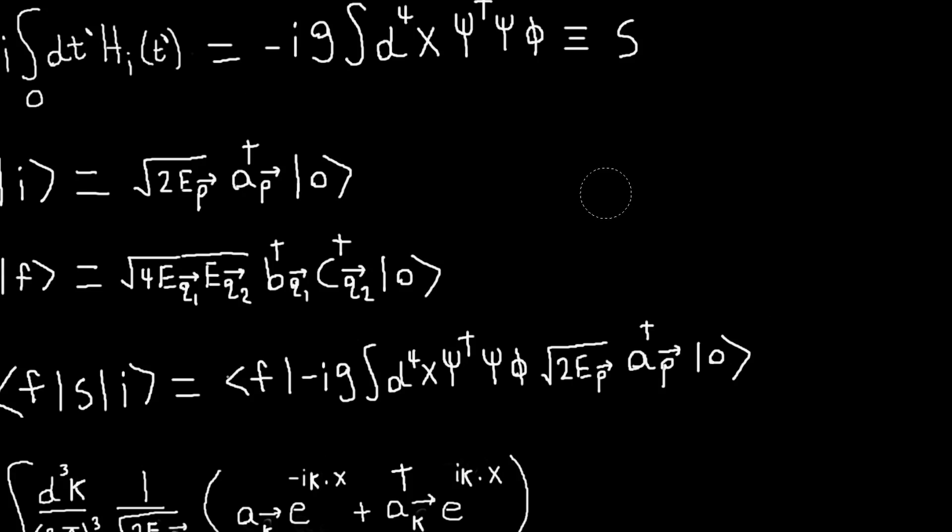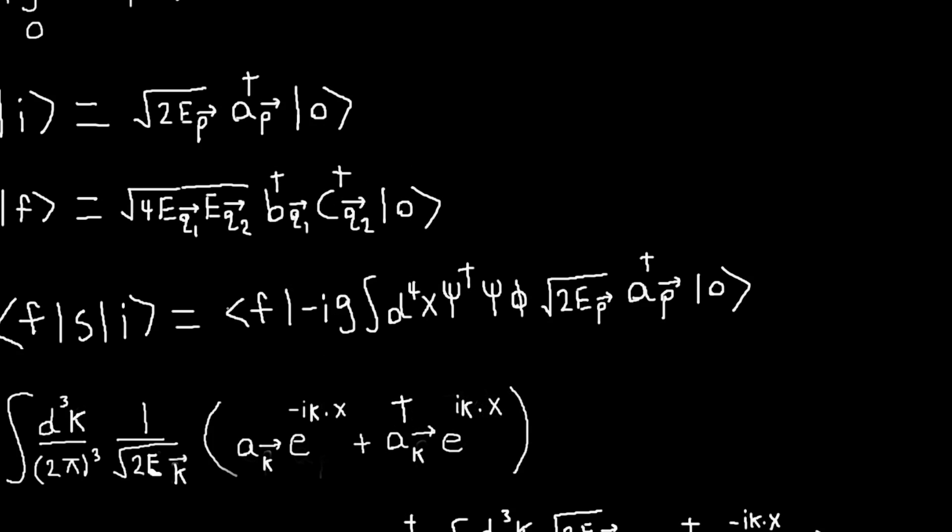And one thing we can do is, we can notice that the final state only has one b-particle and one c-particle. And the initial state has one a-particle, so to get to the final state, what we would have to do is annihilate this a-particle, and then create one b-particle and one c-particle. But since this operator phi involves one term with a lowering operator which is what we want, but one term has a creation operator, that will make a two-particle state. So if I have some state with two a-particles, that's not going to have any overlap with the state. So, I can throw away this term basically, and I'll just be left with all this.